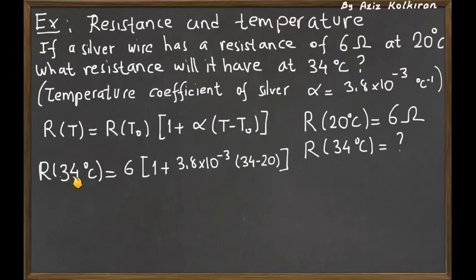If we plug in everything in this expression, we can find that the resistance of this wire at 34 degrees Celsius is given by this algebra, and the final result I can calculate as 6.252 ohms.